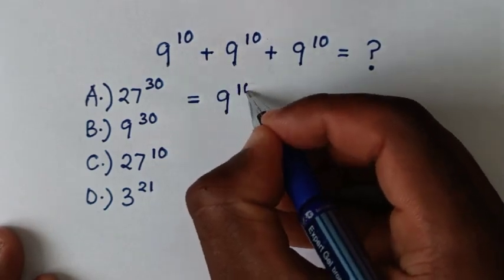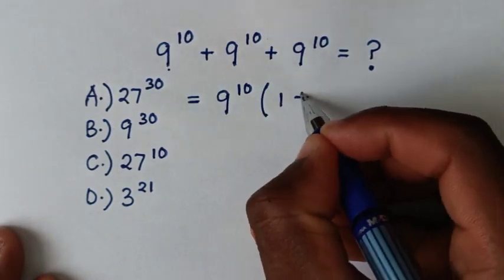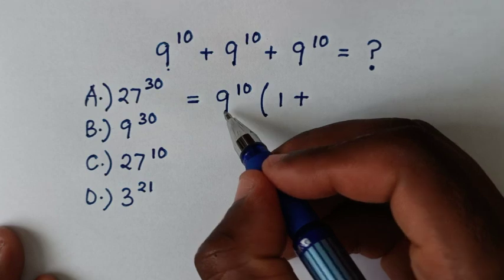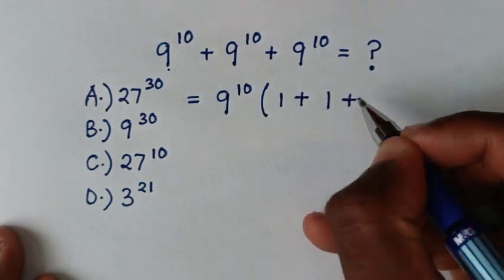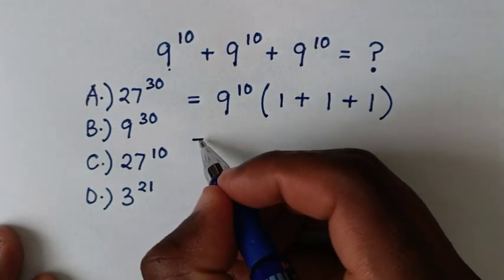Then 9^10 divided by 9^10 is 1, plus 9^10 divided by 9^10 is 1, plus 9^10 divided by 9^10 is 1.